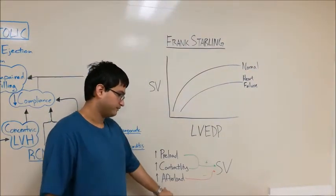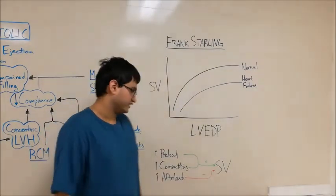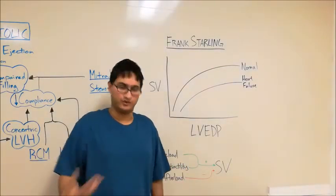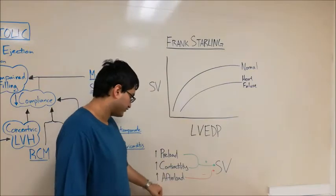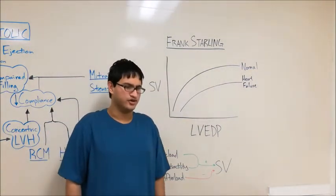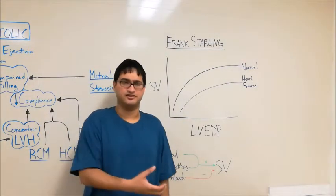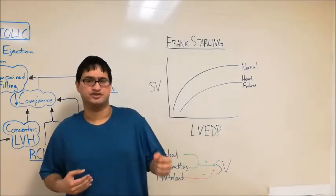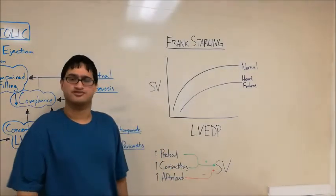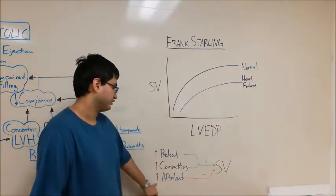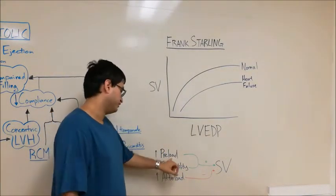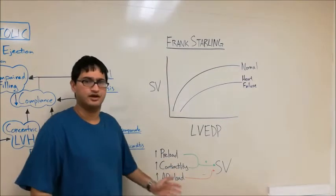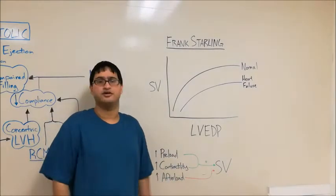Finally, we have afterload — essentially the pressure the heart has to pump against to push blood out, usually the pressure in the aorta. If you have increased afterload, it's harder for the ventricle to pump against it, so you get a decreased stroke volume. It's important to recognize preload, contractility, and afterload and how they affect stroke volume, because these three mechanisms relate closely to the various kinds of heart failure we'll be discussing.